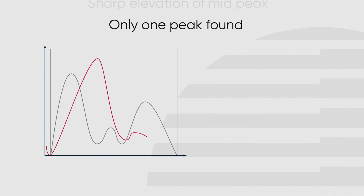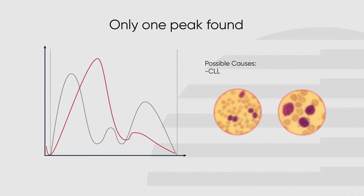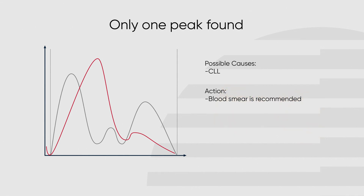Detection of only one peak in the WBC histogram may be caused by chronic lymphocytic leukemia (CLL). Due to the malignancy, the bone marrow focuses on the production of normal and abnormal lymphocytes, causing a decrease in the production of mid cells and granulocytes, noticeable in the histogram as an absence of those peaks. If this occurs, the system may give an OM flag; proceed to confirm the abnormality in smear.